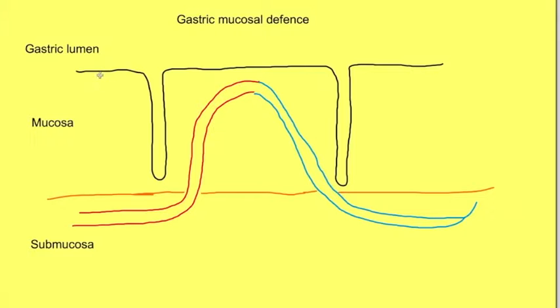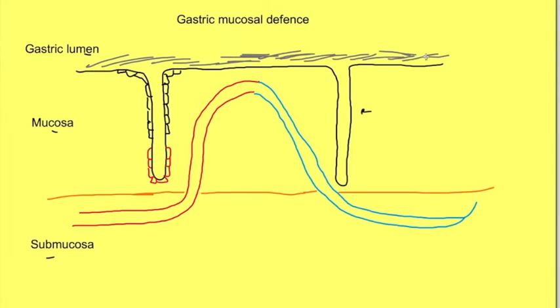This diagram shows the glands dipping into the mucosa, with submucosa beneath and the lumen on top. Various cells line the gastric mucosa: surface epithelial cells, mucous neck cells, HCL secreting cells at the base, and chief cells which secrete pepsinogen. Surface epithelial cells and mucous neck cells secrete mucus which forms a viscous layer in the lumen approximately 1 millimeter thick.